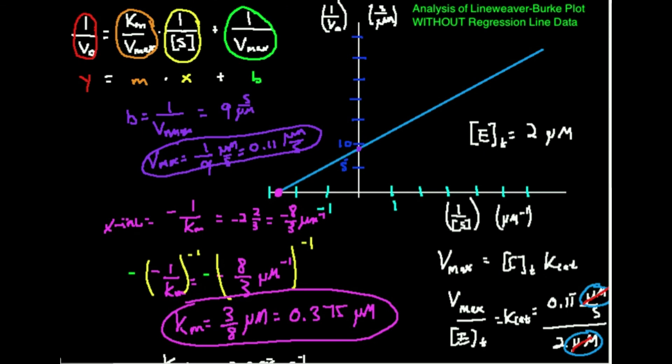This is how you analyze a Lineweaver-Burk plot without the linear regression line data — without y = mx + b. You have to eyeball it, but hopefully this makes sense. Make sure to like this video and subscribe for future videos. We'll do a bit more with Lineweaver-Burk plots and then move into something called a Haynes-Woolf plot, which is also fairly useful. Thanks for watching.